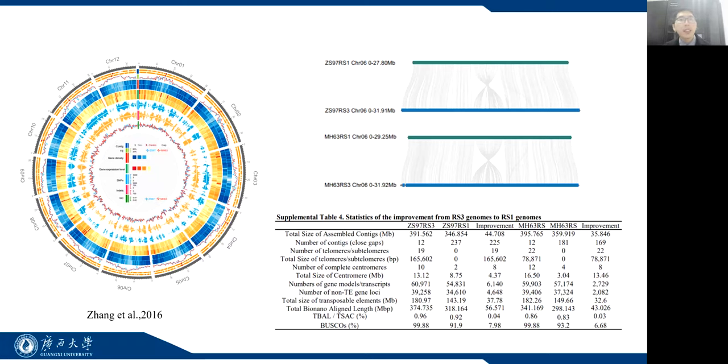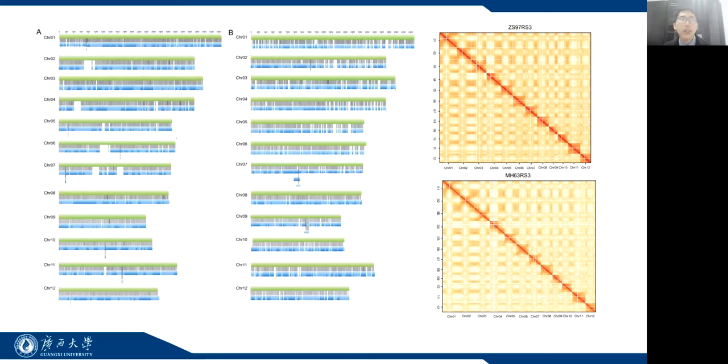The accuracy and integrity of RS3 assemblies have been validated in a number of ways. Hi-C and BioNano optical maps showed high consistency across all chromosomes, resulting in correct array ordering and orientation.